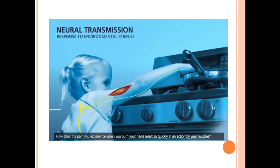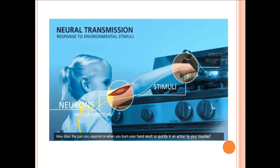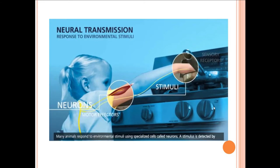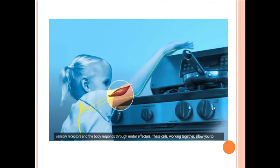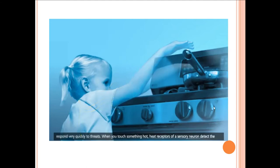How does the pain you experience when you burn your hand result so quickly in an action by your muscles? Many animals respond to environmental stimuli using specialized cells called neurons. A stimulus is detected by sensory receptors and the body responds through motor effectors. These cells working together allow you to respond very quickly to threats.